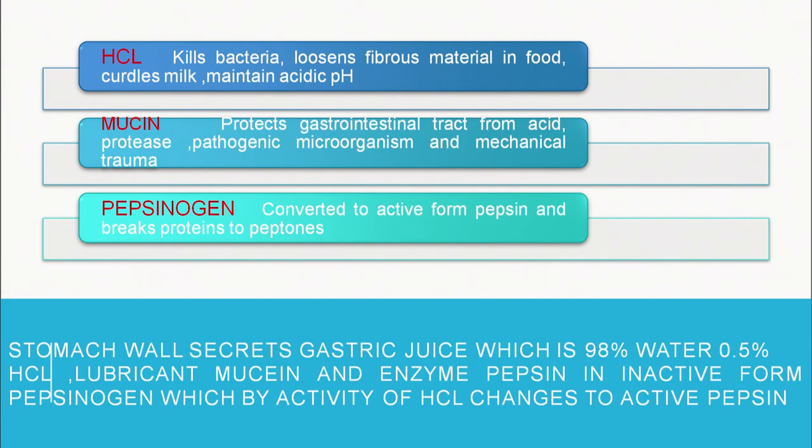In the esophagus, the pH remains between 7 to 8. Once the food moves into the stomach, the stomach wall produces HCl. The pH of the stomach becomes acidic. This HCl kills bacteria, loosens the fibrous material in food so that enzymes can act on it, and curdles milk so that it does not flow back. Once the milk is curdled and a precipitate is formed, it cannot flow back easily, and an acidic pH is maintained.